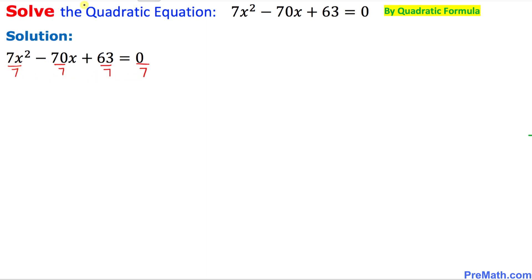Once we divide this, this is what we are going to get. That is going to give us x squared minus 10x plus 9 equal to 0.